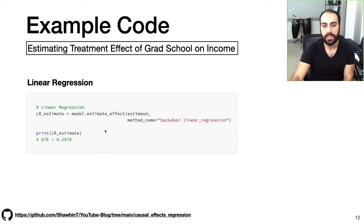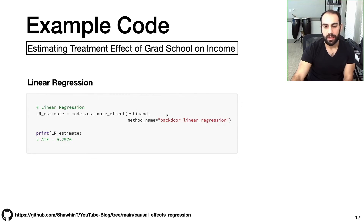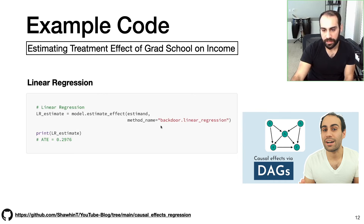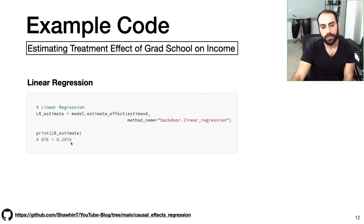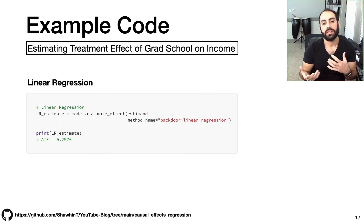Starting with linear regression — the dowhy library makes it very easy. We can get the linear regression causal estimate with one line of code: we input our estimate and specify the method as linear regression with the backdoor criterion. If you want to learn more about the backdoor criterion, I covered that in a previous video. The result is an average treatment effect based on linear regression of 0.2976, which is in the ballpark of what we've seen in other analyses using this dataset.